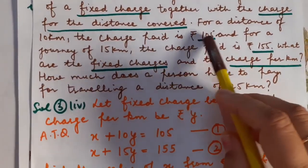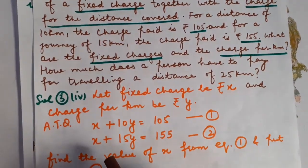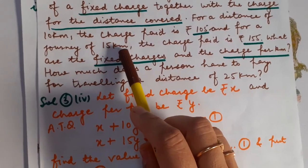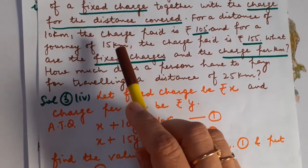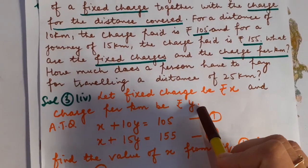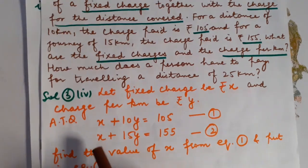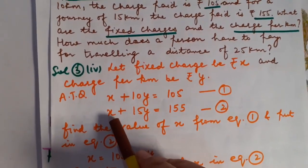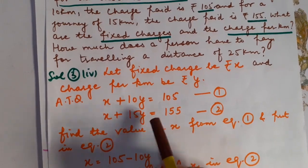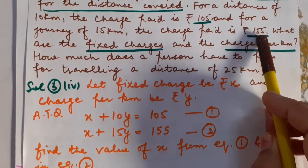This is the total charge paid by the passenger in case 1. Now let us discuss case number 2. For a journey of 15 km, the distance charge is 15Y, and of course the fixed charge will also be paid. So the next equation is X plus 15Y = 155. This is the total charge given in the question for covering a distance of 15 km.